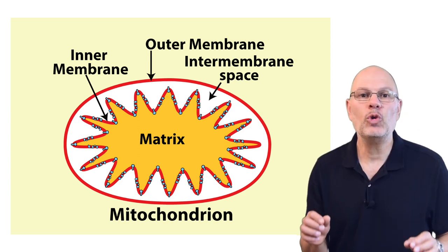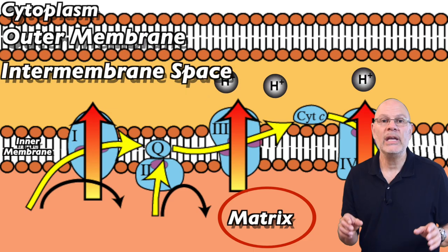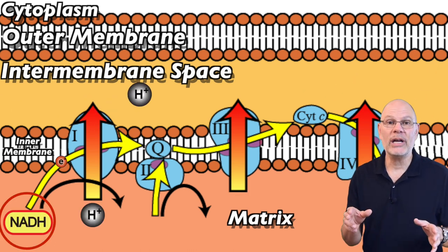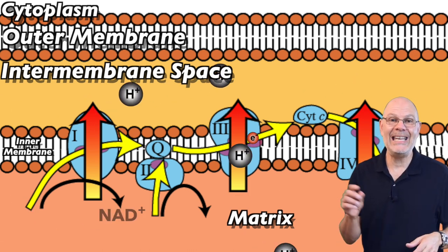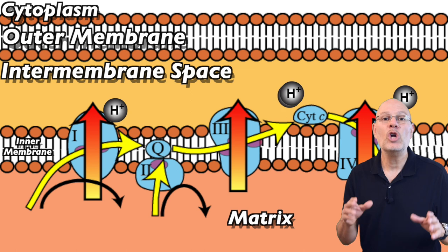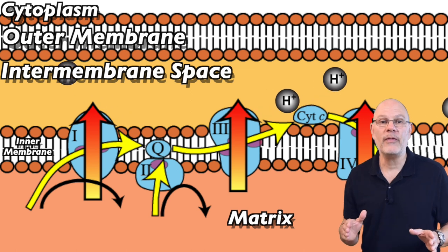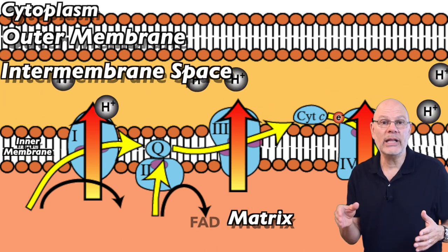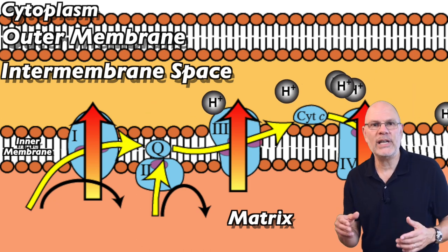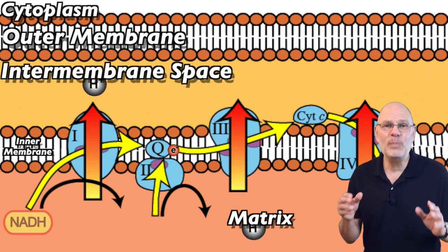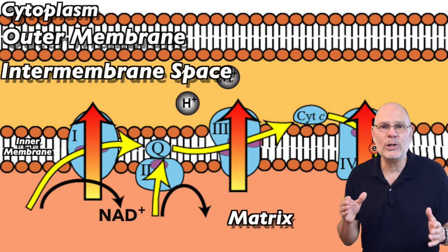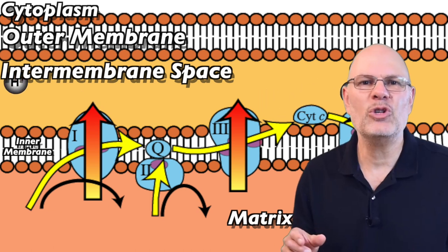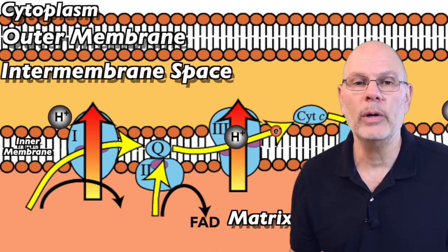Now let's shift to a much more detailed depiction. Here's the matrix. You can see the reduced electron carriers, NADH and FADH2, dropping off their electrons. These electrons flow along the electron transport chain, represented by the yellow arrow, which is built into the mitochondrial inner membrane. This electron energy is essentially an electrical current.